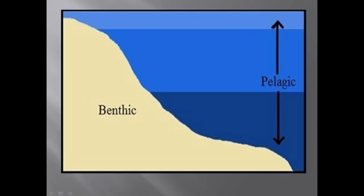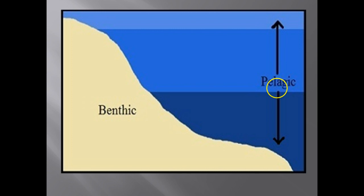Now a bit about zones in the ocean. The ocean pelagic biome is a vast realm of open blue water, constantly mixed by wind-driven oceanic currents, and covers approximately 70% of the Earth's surface. Phytoplankton and zooplankton are the dominant organisms in this biome, along with a variety of free-swimming animals.